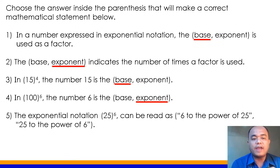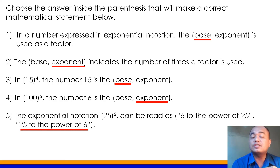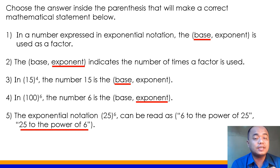Number 5: The exponential notation shown here can be read as 6 to the power of 25 or 25 to the power of 6. The correct answer is 25 to the power of 6, or pwede rin 25 raised to 6, or 25 to the exponent 6.